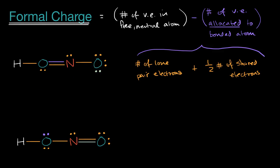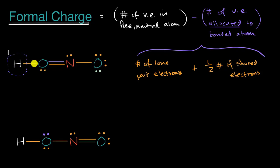Let's start with the hydrogen. The number of valence electrons in a free, neutral atom of hydrogen is one — you can look this up on the periodic table. Now, how many valence electrons are allocated to the bonded atom? Draw a circle around that atom: you capture all of the lone pairs plus half the bond electrons. Hydrogen has no lone pairs, and one bond gives one allocated electron. So one minus one gives a formal charge of zero for this hydrogen.